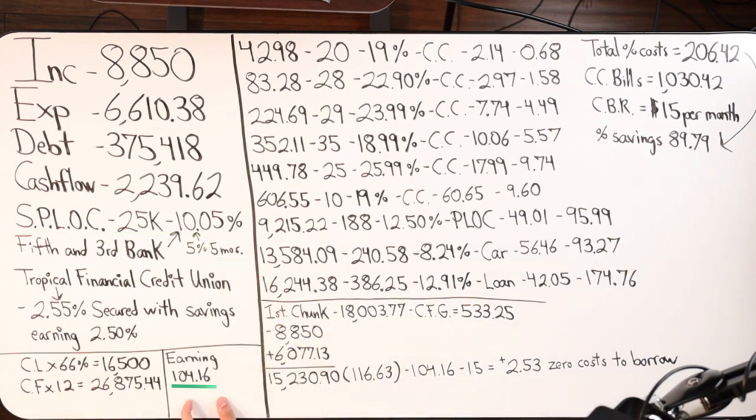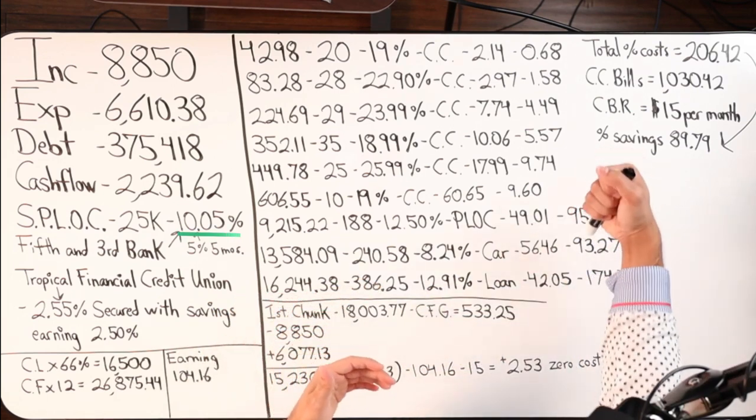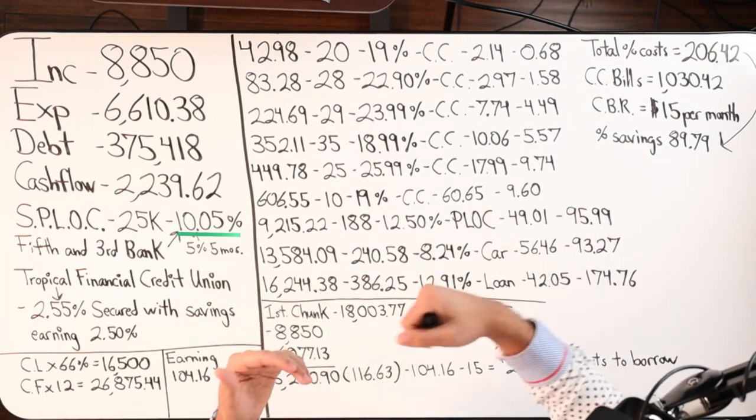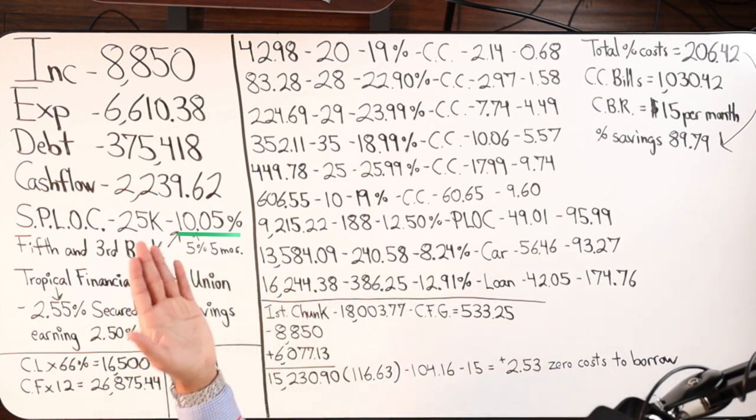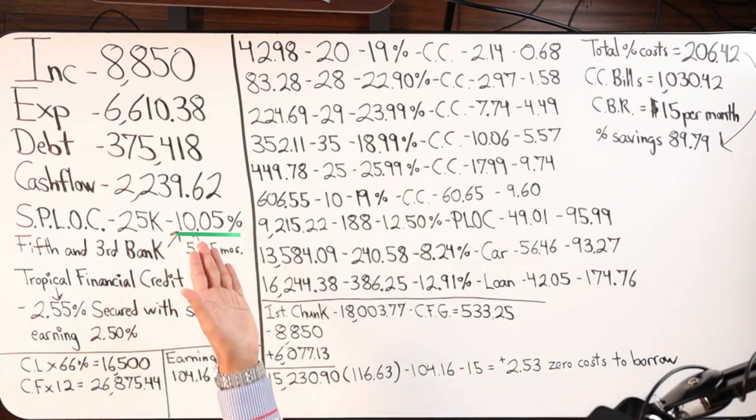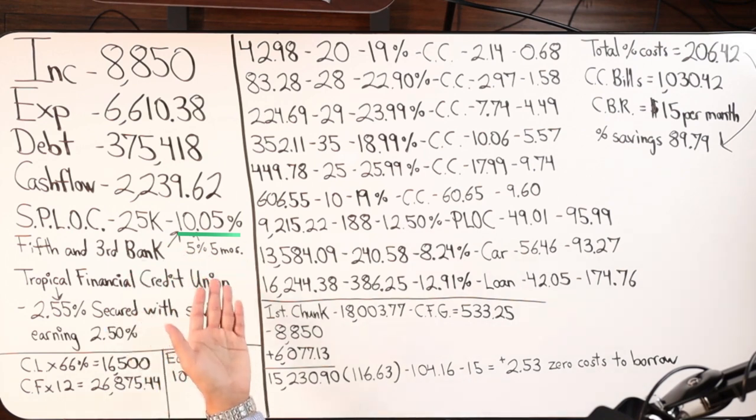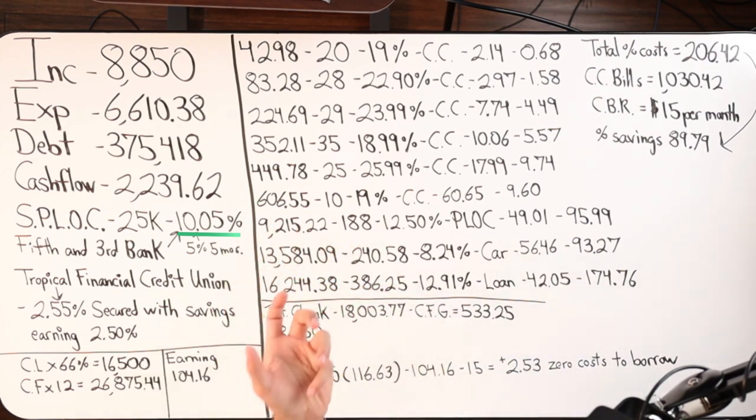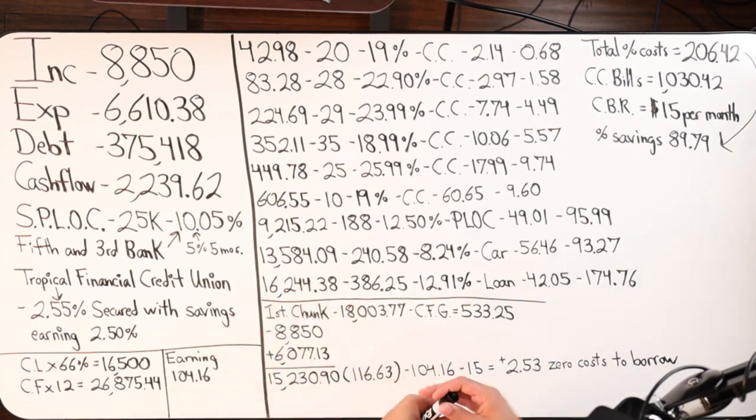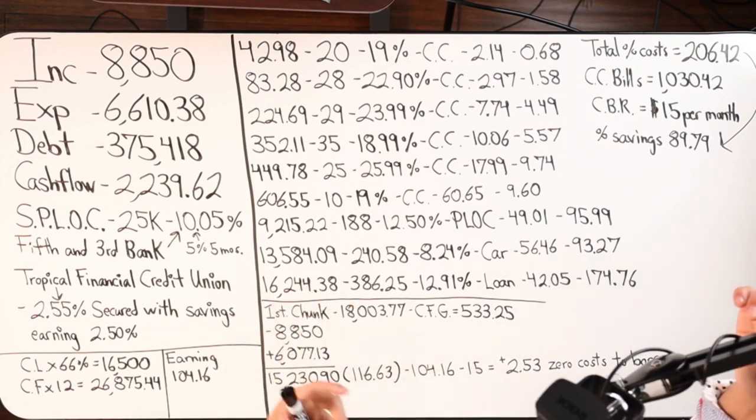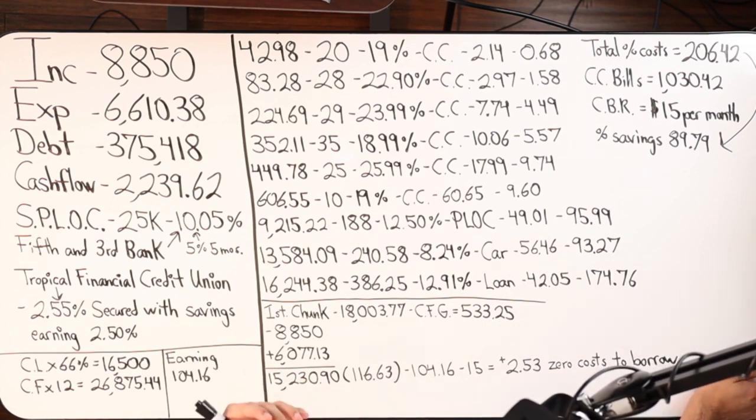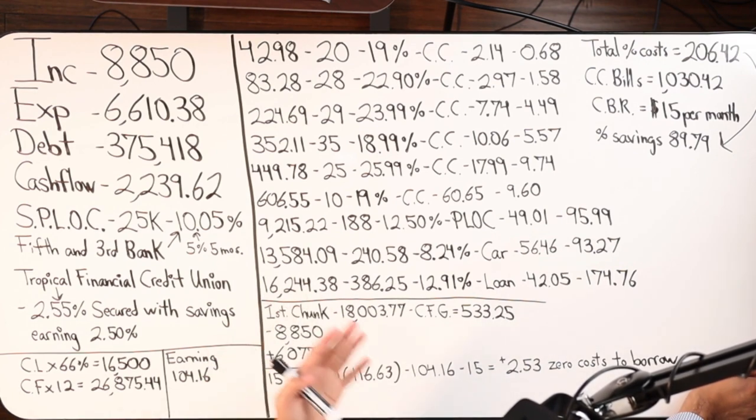This person had $25,000 in savings. They went ahead and secured it with a bank called Fifth and Third Bank. Gave them a 10.05% interest rate, which I believe is variable. And they're earning 5% on $25K for about for the first five months. So they're going to be earning about $104.16 per month on top of being charged the 10.05% interest rate. Our goal is to offset that 10.05% rate. Can we do that? We're going to run the math. We're going to prove it, right?